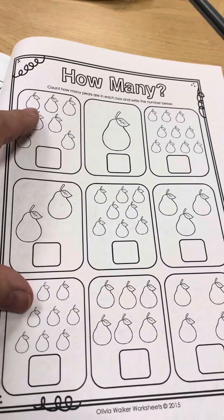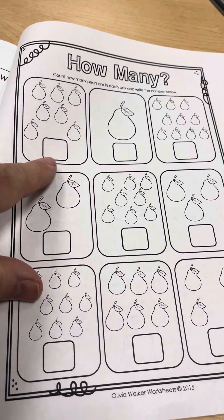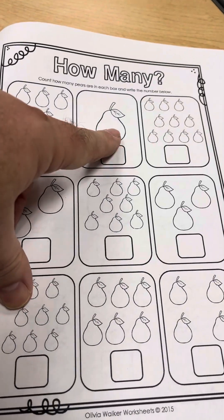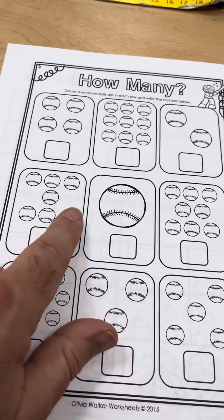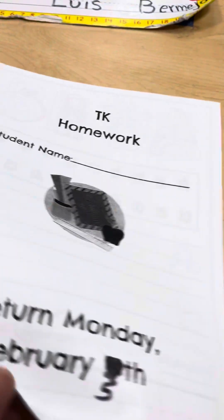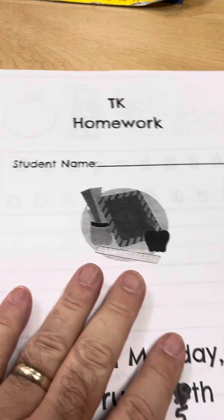Here they're going to count how many objects they have and then write the number. Count how many objects and write the number. And they're doing the same over here. And that is the TK student's homework.